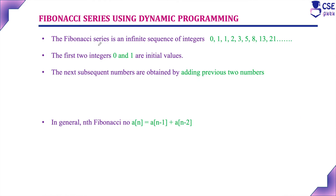The Fibonacci series is nothing but an infinite sequence of integers. The series is 0, 1, 1, 2, 3, 5, 8, 13, and likewise.